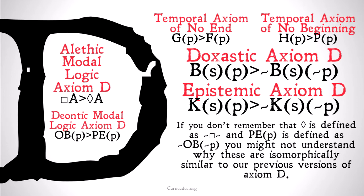If you don't remember, the possibility diamond is defined as it's not the case that it's necessary that it's not the case that something. And it's permissible that P is defined as it's not the case that it's obligatory that not P. Because we don't have a weak operator in doxastic or epistemic logic, we just use the negations and explicitly explain what we're defining it as.